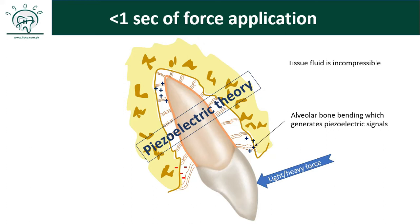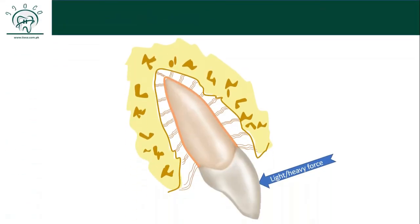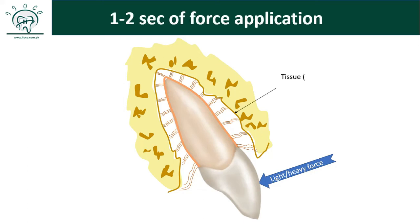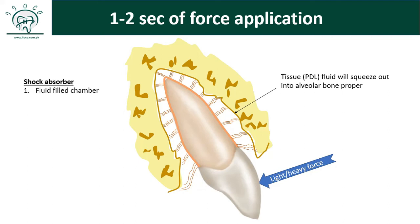In orthodontics, you do not remove the force in a second — you keep applying it. So what happens when force has been kept for one to two seconds? The tissue fluid will start to squeeze out into the alveolar bone proper, because alveolar bone proper is porous. Because of this, PDL also acts as a shock absorber, meeting two main criteria: it has fluid and it has porous bone in the surrounding.